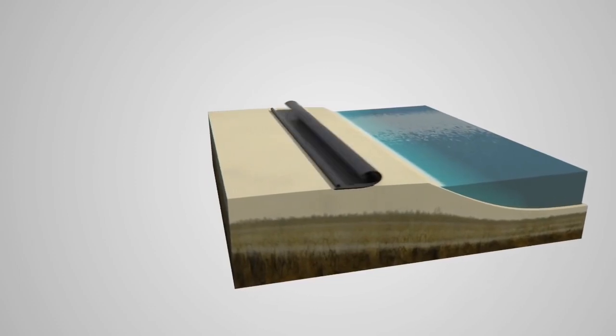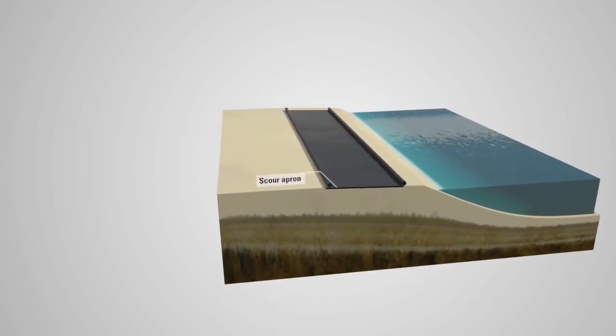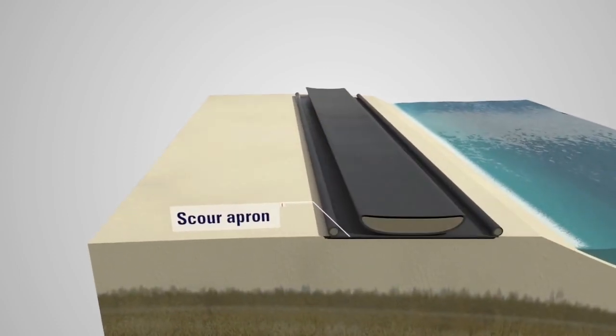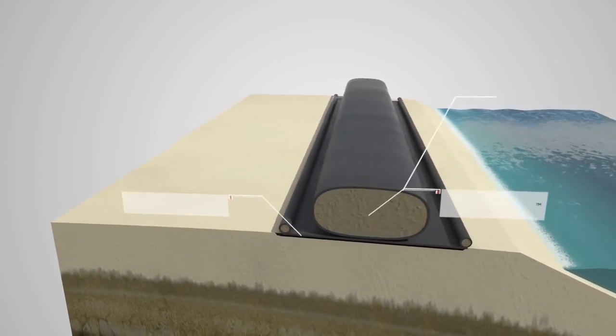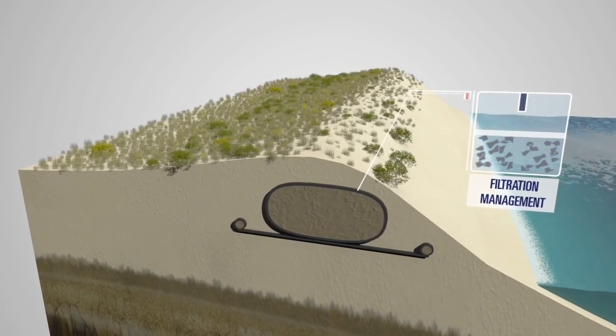During hurricanes and storms, Tenkata Geotube systems hold the sand and soil of coastlines into place, preventing erosion and property damage. Even original beach profiles can be recreated.